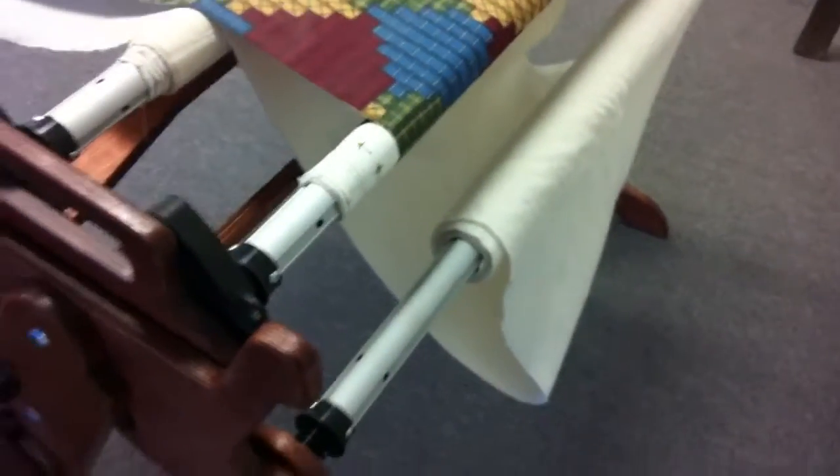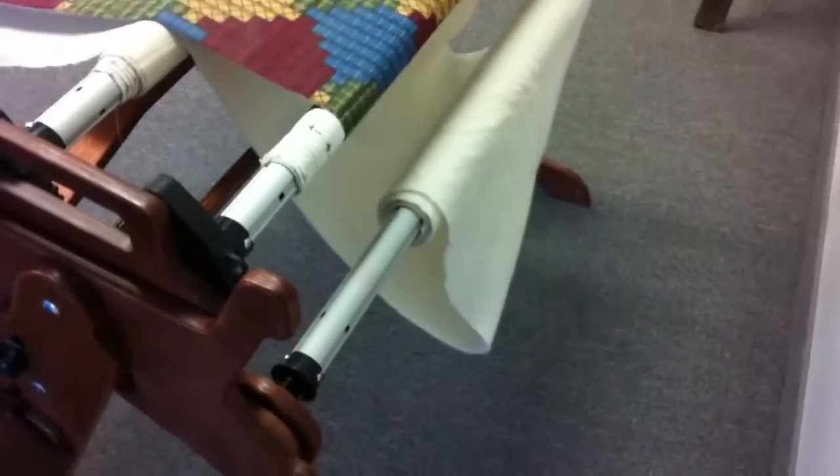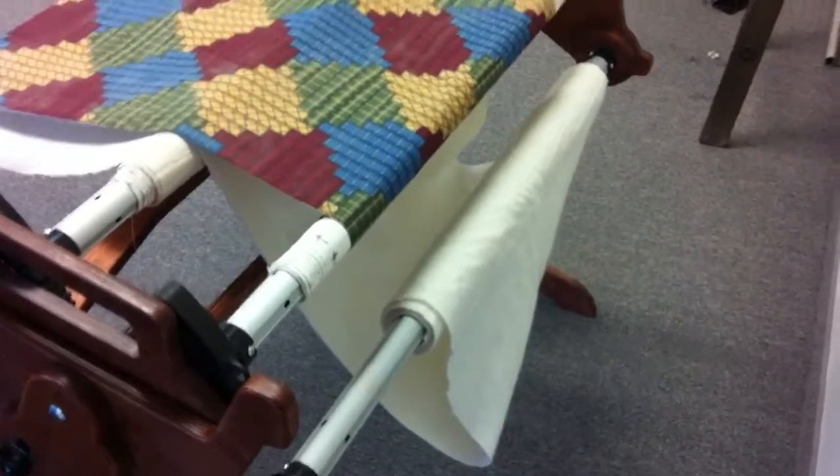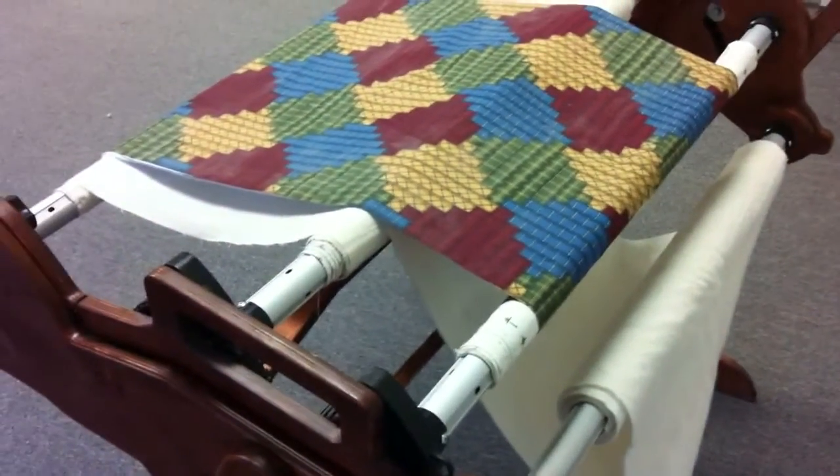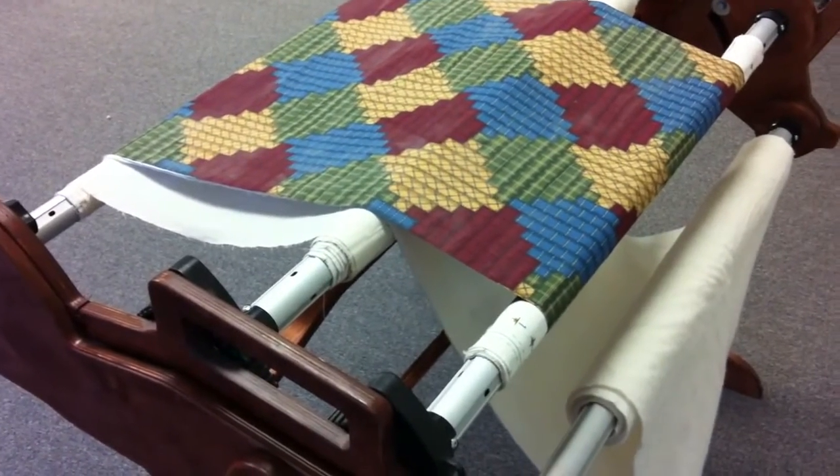If you're into hand quilting, this is definitely the way to go. There's a batting rail to hold your batting, and then there's the quilt top rail. And then the quilt back rail is that rail.